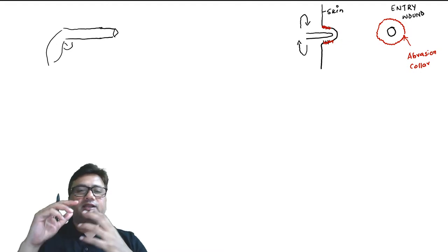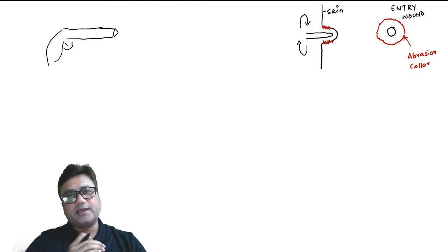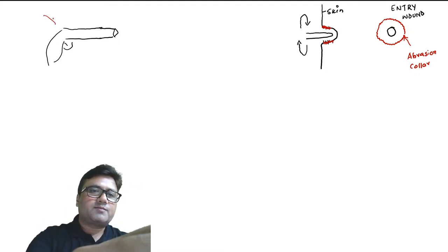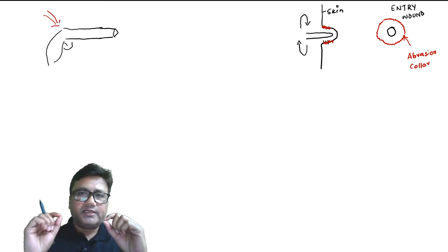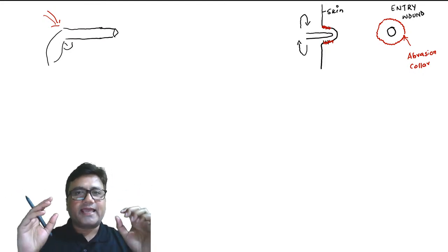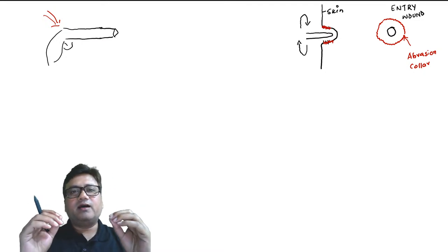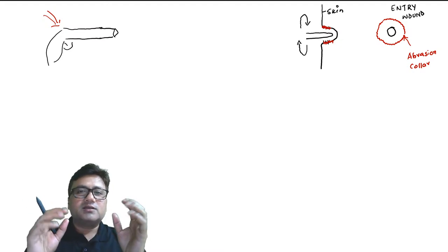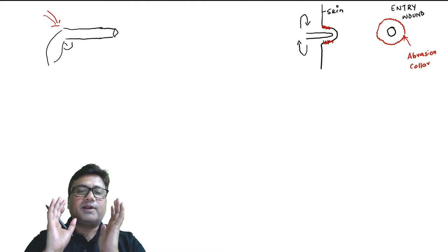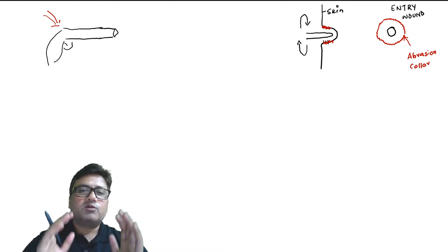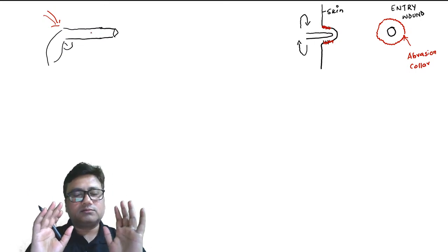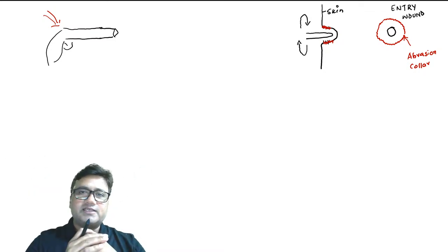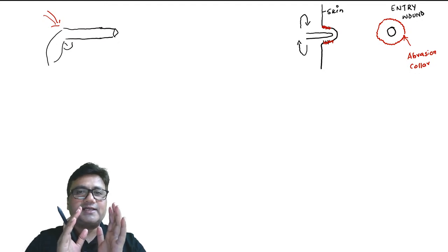When a rough surface comes in friction with the skin, it causes development of an abrasion — it abrades the superficial epithelium of that area. This entity that gets developed around the entry wound, surrounding it like a circle, because of the bullet entering through the skin, is called an abrasion collar.